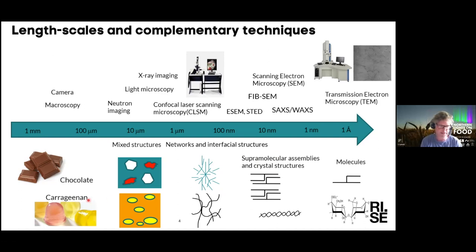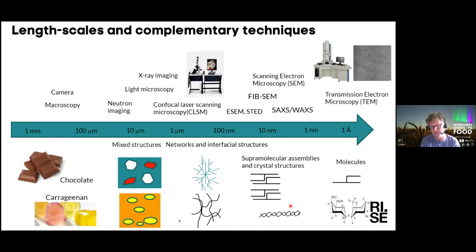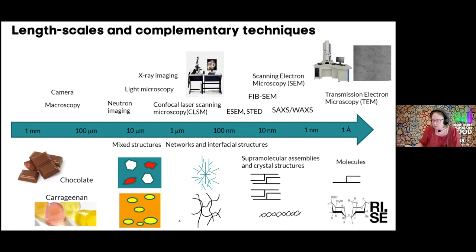On the other hand, you can go to other materials like carrageenan. At the 10 micrometer length scale and so on, you could have phase separation. But if you go down into the phases, you start to look into the gel strand network. And in carrageenan, you have double helix structures and so on. All these are interesting to understand at the different length scales in order to understand our macro-scale properties of the product.